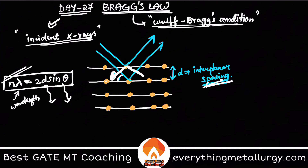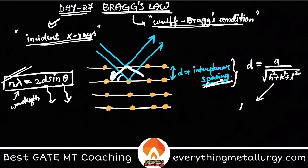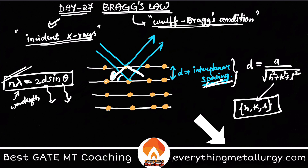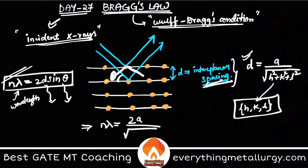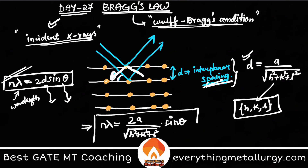Now, how do we calculate d? The interplanar spacing d equals a divided by the square root of (h² + k² + l²), where hkl are the family of planes and a is the lattice parameter. All parallel planes share the same hkl. So Bragg's Law can also be written as: n*lambda = (a / sqrt(h² + k² + l²)) * sin(theta).